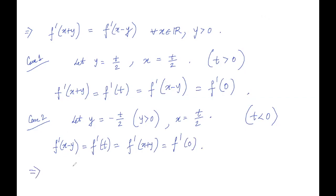So we can conclude that f dash t equals f dash 0 for all t in R. And this implies that f double dash t equals 0 since f dash 0 is a constant, and thus this implies that f is a linear function. So we can write f of x equals a x plus b for some real a, b.